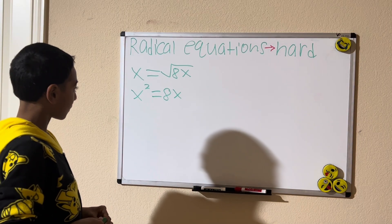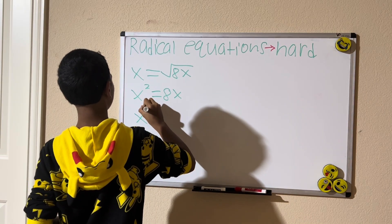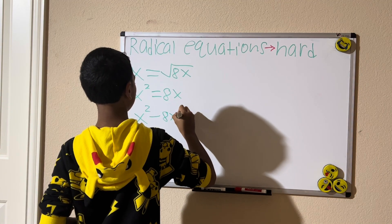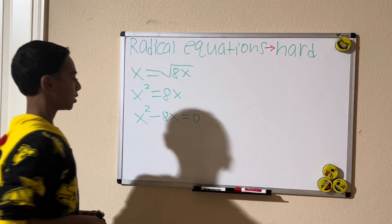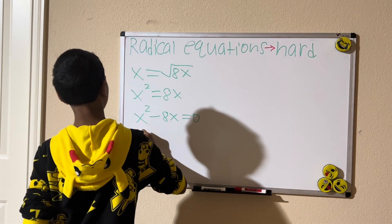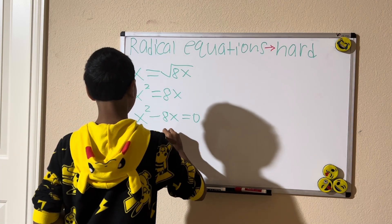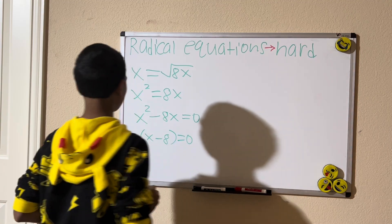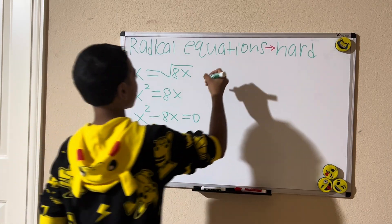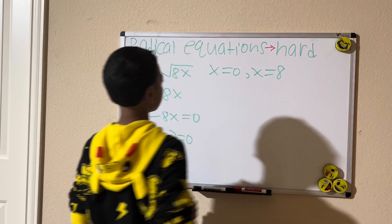Let's rearrange the terms so that one side equals zero. We have x squared minus 8x equals zero. We see a greatest common factor, so we're going to factor it out. The GCF is x, giving us x times (x minus 8) equals zero, because x times x is x squared and negative 8 times x is negative 8x.